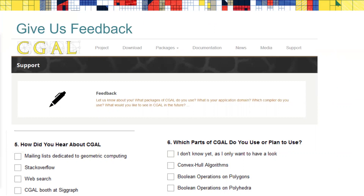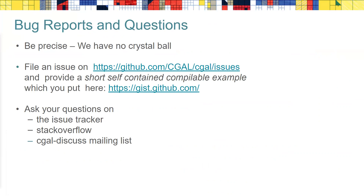On the support page of the CGAL website you can find a link to a feedback form. We don't ask who you are, but it helps us to prioritize knowing what of CGAL you use, in which application domain you work, and how you use it. Bug reports and questions are very valuable contributions — only if we learn about a bug do we get a chance to fix it. What we need is a short, self-contained, compilable example. File a GitHub issue, upload code and data that crashes or produces a wrong result, and give us enough context to reproduce your problem. We offer several communication channels: the issue tracker, Stack Overflow, or the CGAL-discuss mailing list.